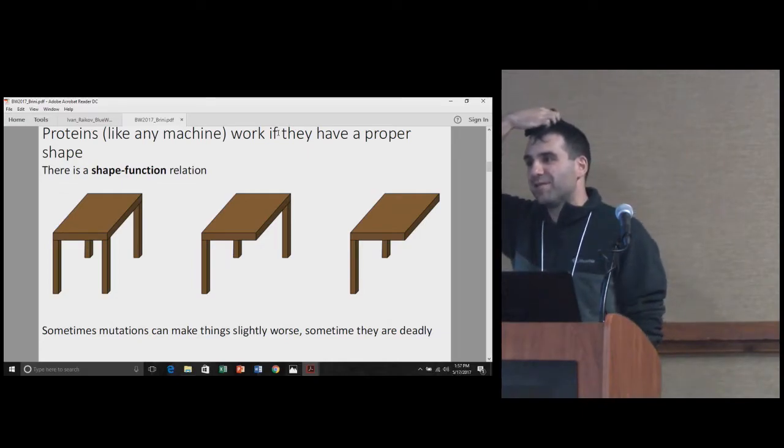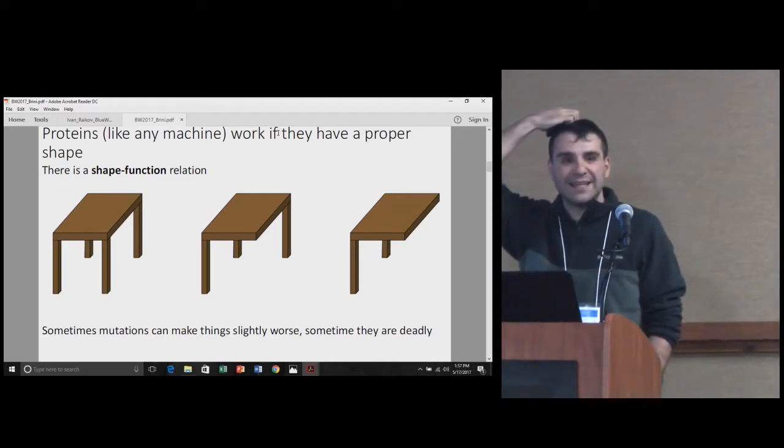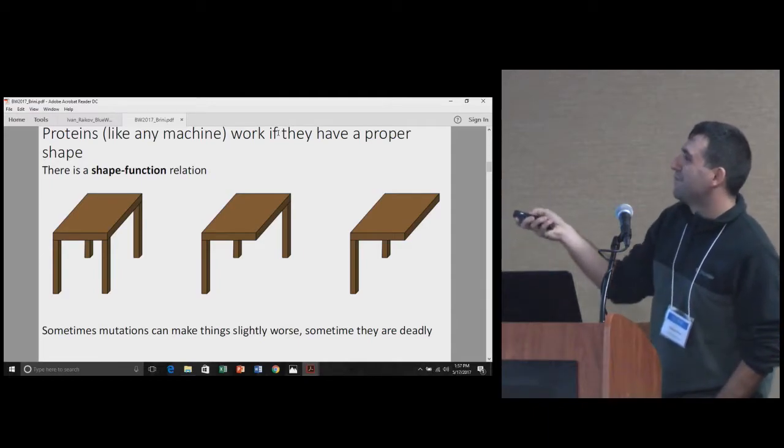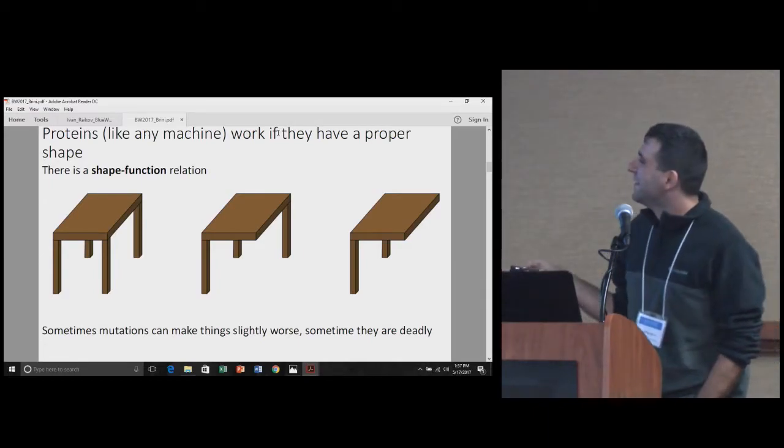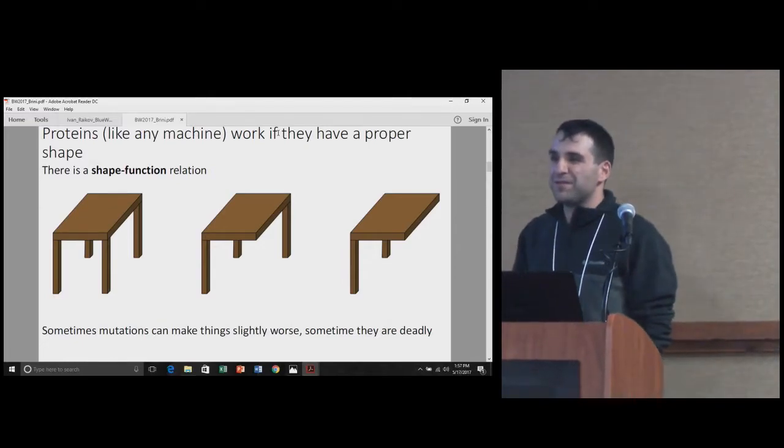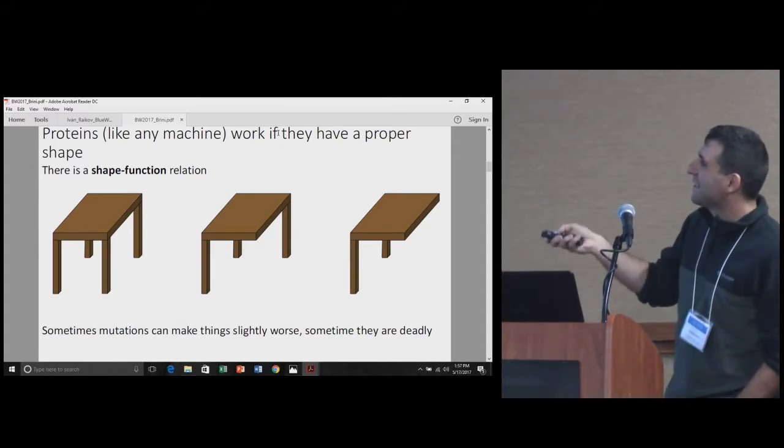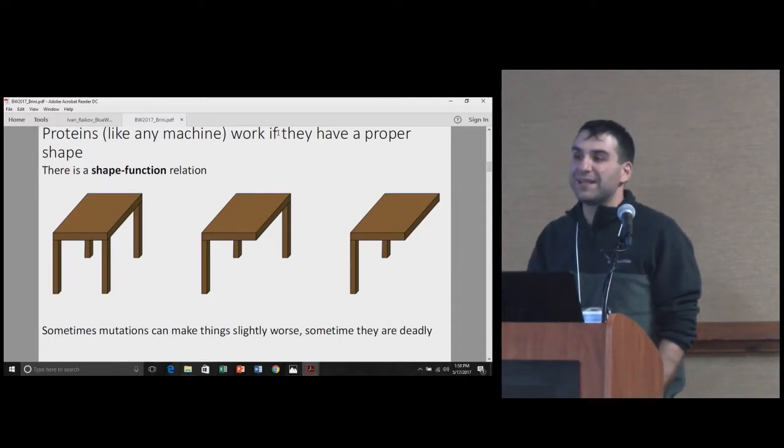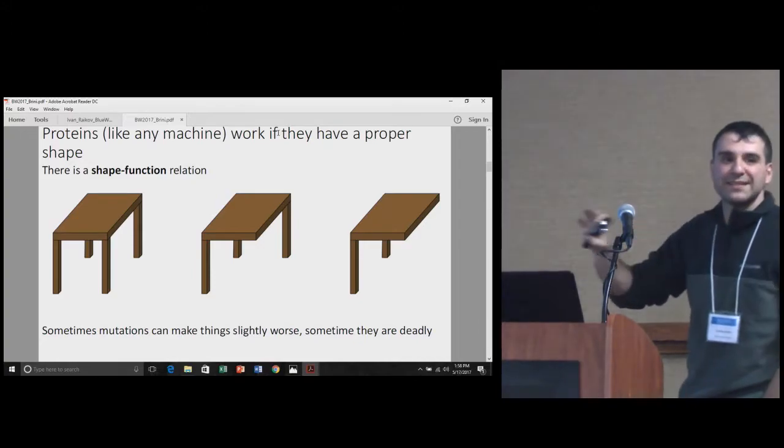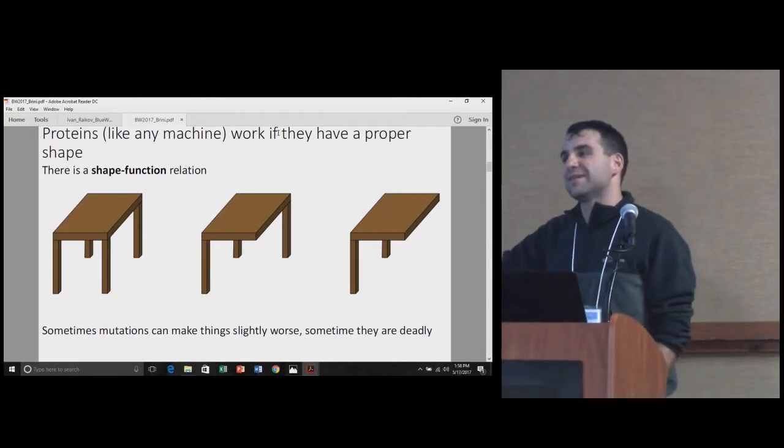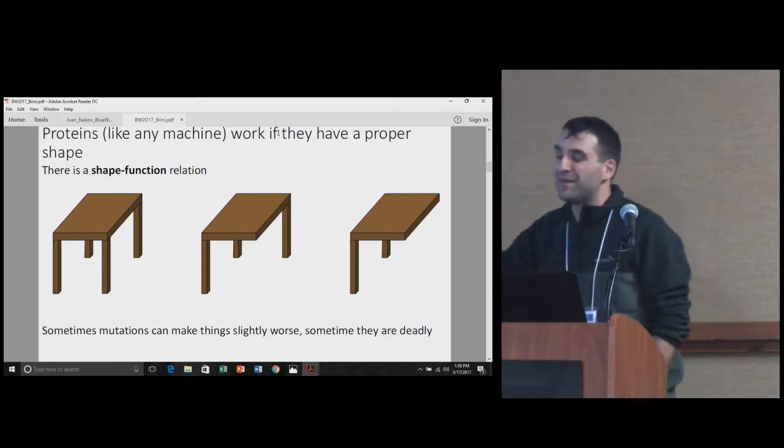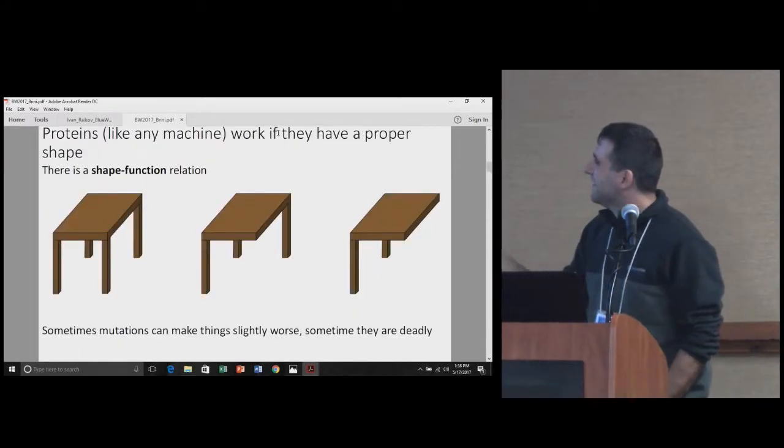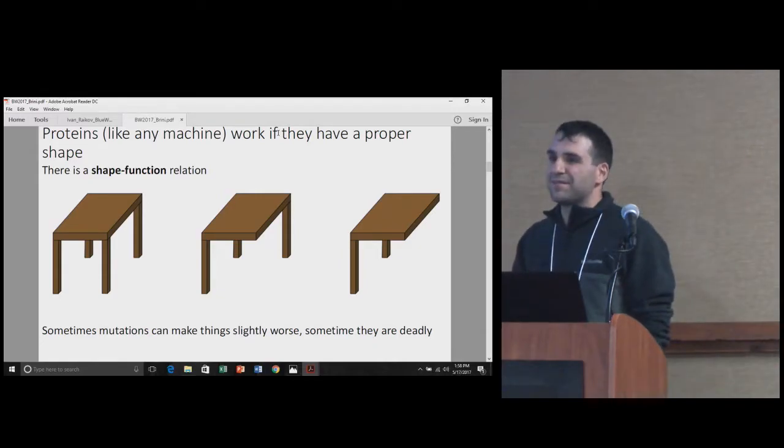Proteins are machines. When does a machine work? If you think of machines or basically any object in the real world, they work when they have a given shape. This is just a table. If you want a table, you need four legs and a flat top. If you don't have this, you don't have a table. You may have a slightly wobbly table or a completely defective table. Only when we have the proper shape, we have a proper table and we can use it. That's the same for proteins. If a protein has the right shape, it will function properly. If not, in the best case it may not function, in the worst case it will be even harmful. This is why the first thing we need to understand of a protein is its shape.